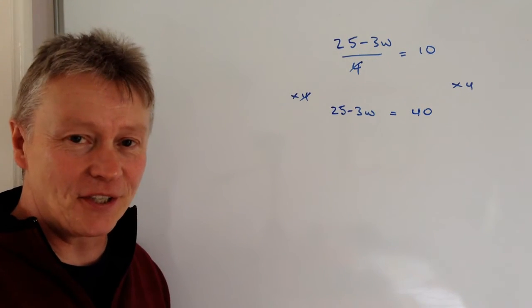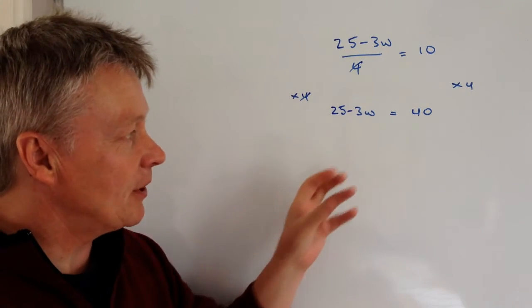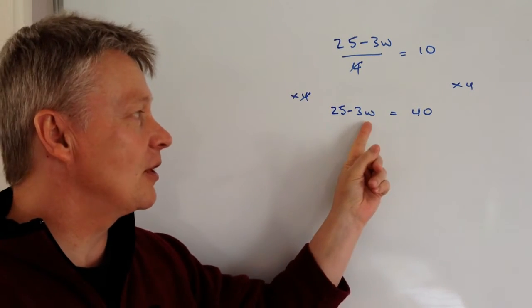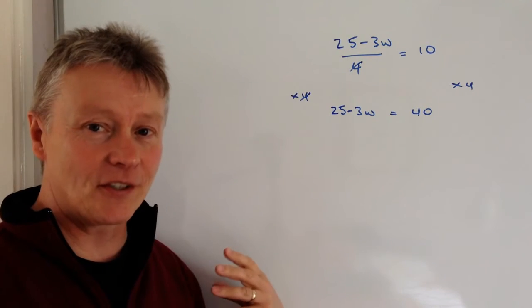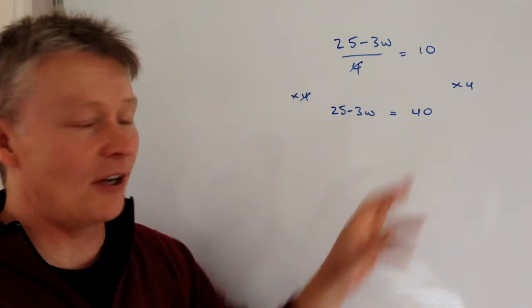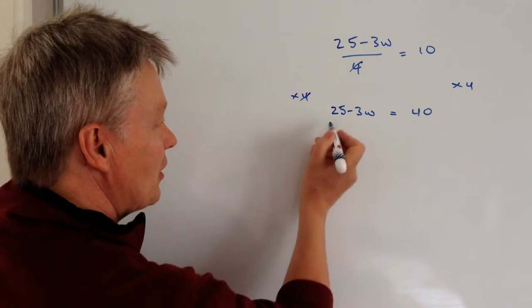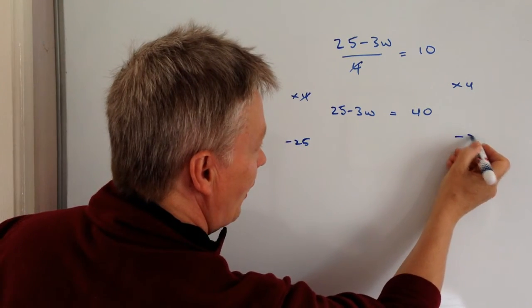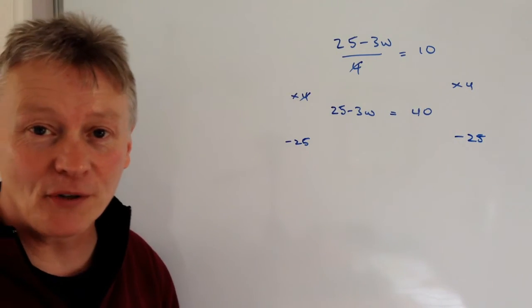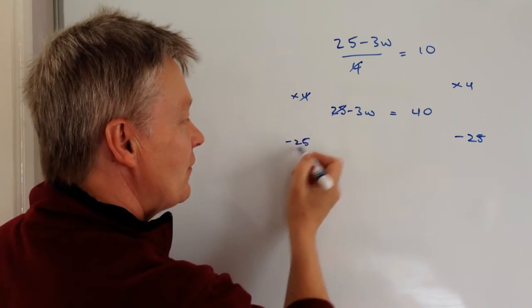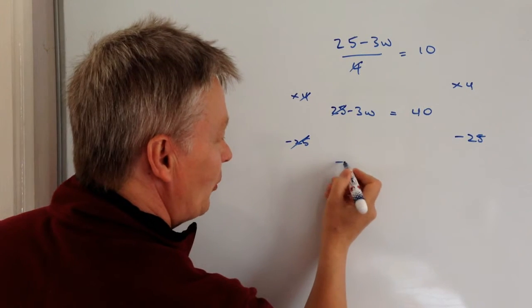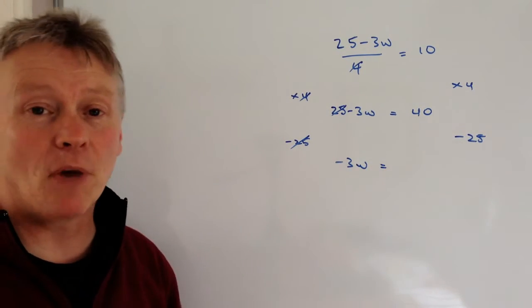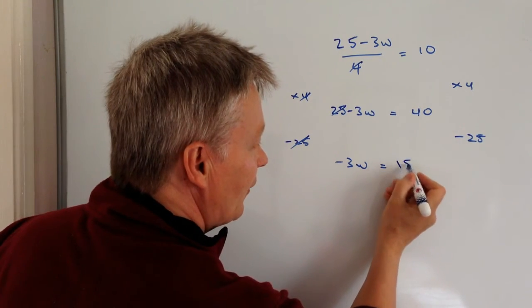So it's looking a little bit easier to deal with now. We need to get the value that incorporates W on the left-hand side, and the numbers on the right-hand side. So what I'm going to do is minus 25 from both sides. If I minus 25 from both sides, it means I lose this value here, and I get left with minus 3W. And I've got 40 minus 25, which is going to be 15.